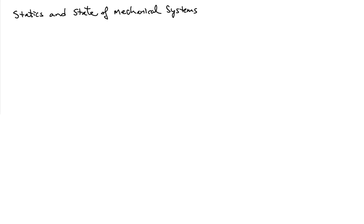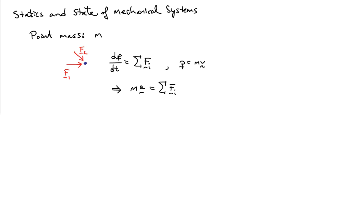I'd like to begin this lesson with a review of statics and the state of mechanical systems. This is a review of basic physics. Let's consider a point mass m subjected to two forces, F1 and F2. The time rate of change of the momentum of that particle equals the sum of the forces acting on it, where momentum is defined as mass times velocity. This can be written as mass times acceleration equals the sum of forces — Newton's second law.